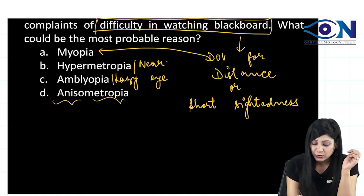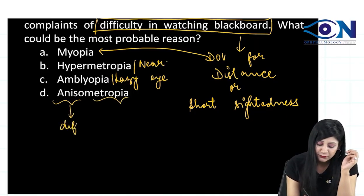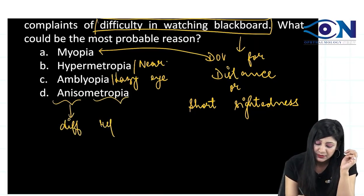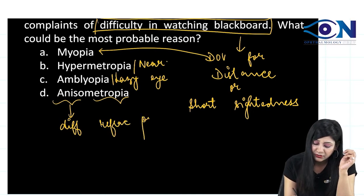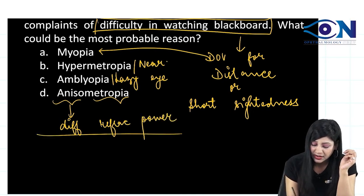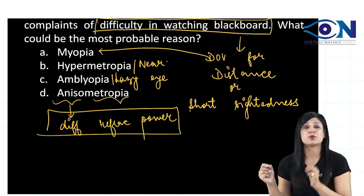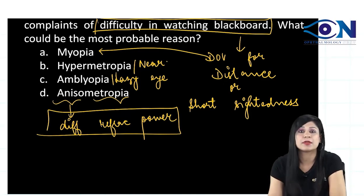In the anisometropia, aniso means different, metropia means refractive power. If I am having different refractive power in both the eyes, that is called as anisometropia.